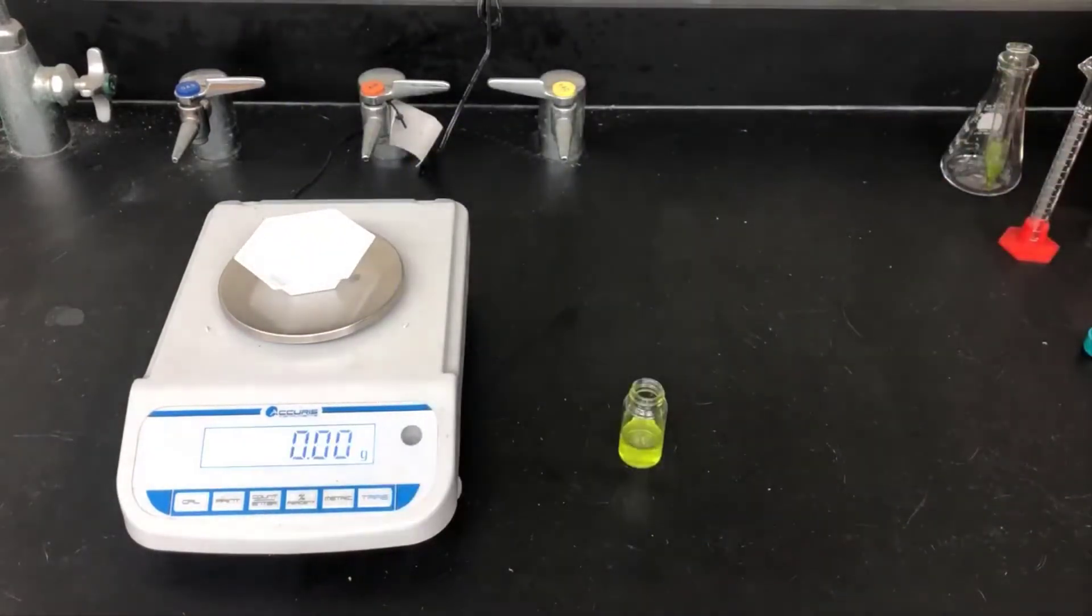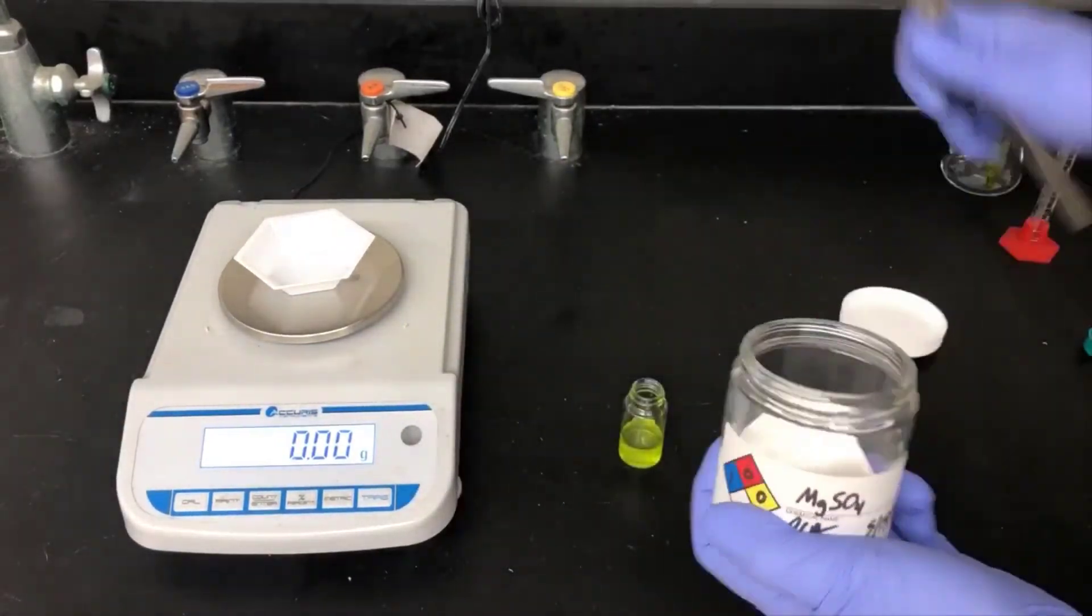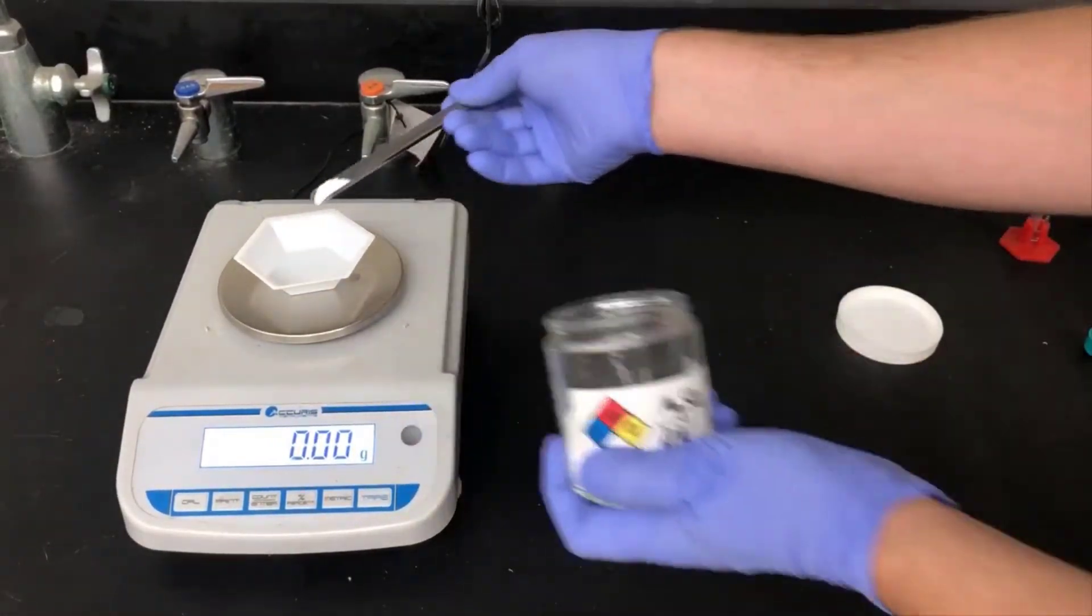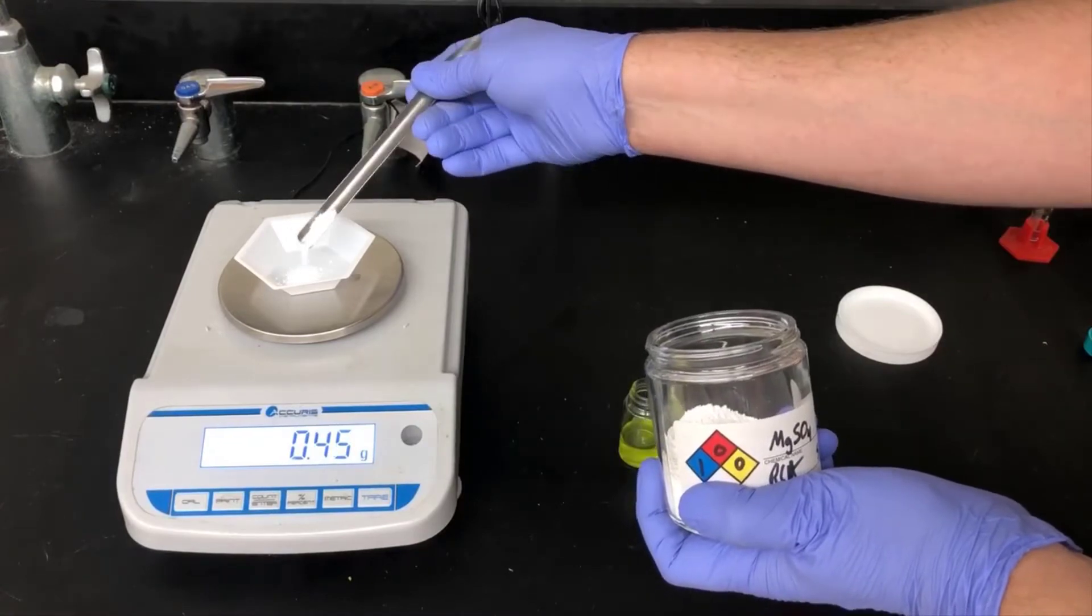Now, I'll weigh out about 1 gram of magnesium sulfate. This is a drying agent that'll be used to remove the water that comes along with the citrus zest. It's not important that you get 1 gram exactly, but somewhere close is good enough.